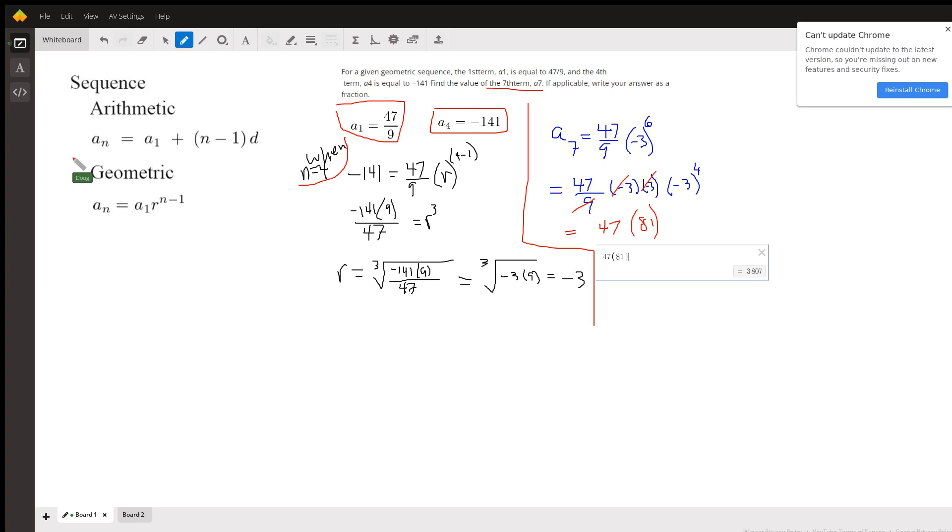Now the formula for the nth term of the geometric sequence is: the nth term equals the first term times the common ratio raised to the n minus 1 power. In other words, you have to multiply by n minus 1 factors of r to get from the first term to the nth term.